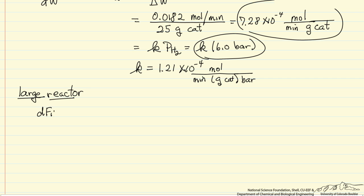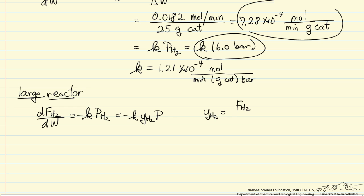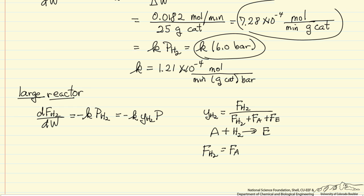For the larger reactor, we're going to write a mass balance for hydrogen in terms of the rate constant and the pressure of hydrogen — with a minus sign since hydrogen is reacting. I'm going to write this in terms of the mole fraction and total pressure of hydrogen. The mole fraction of hydrogen is the flow rate of hydrogen over the total flow rate, which includes hydrogen, acetylene, and ethylene. The reaction is A plus hydrogen goes to ethylene, and since the stoichiometry is one-to-one, the inlet flow rate of hydrogen equals the inlet flow rate of acetylene.